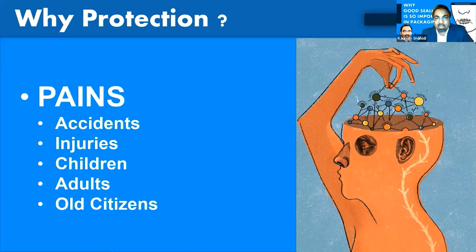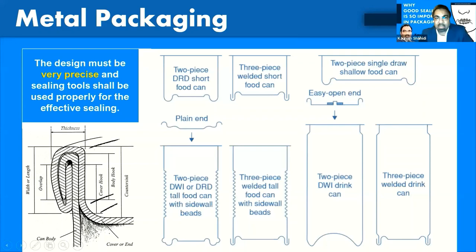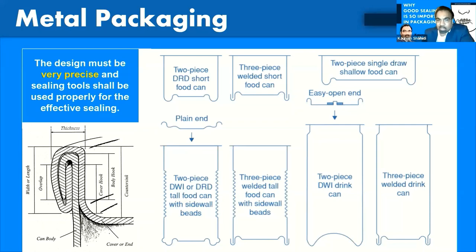Let me take you through different types of packaging materials and what the critical elements are. When we talk about metal packaging, different types of metal packages are used in the industry. In metal packaging there are specific designs in terms of the area where two parts are joined or sealed together. As you can see in the pictures, different types of packages of different sizes are being joined together to make a single piece, so it has to be very precise so that the ultimate sealing has no issues.